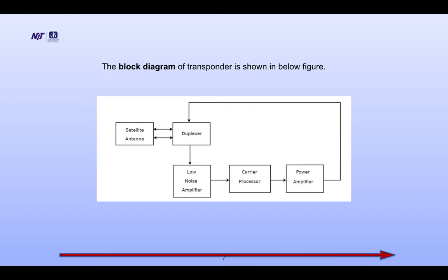This is the block diagram of a transponder — this is the basic block diagram; detail will be discussed later. The components include: satellite antenna, duplexer, low noise amplifier, carrier processor, then power amplifier and subsequent blocks. These are the main features.